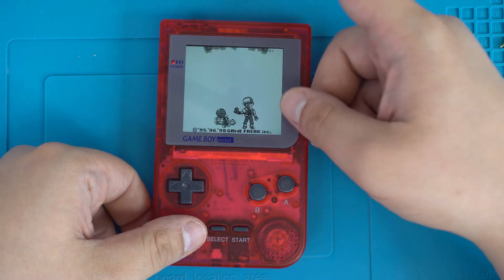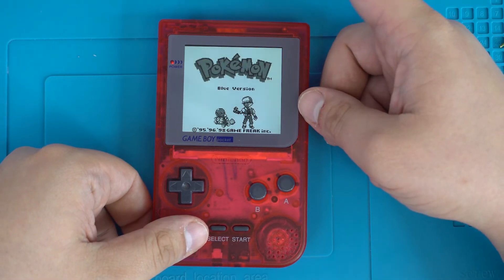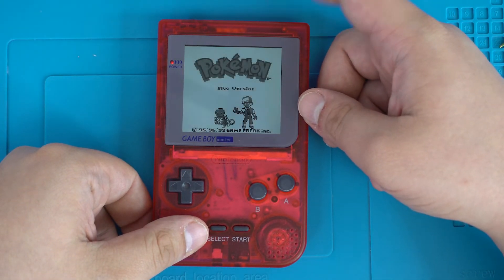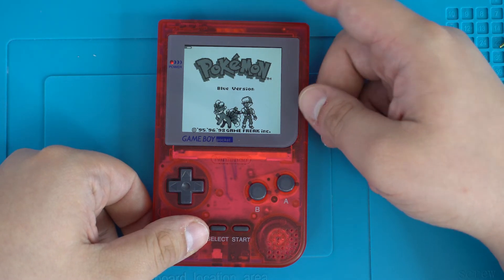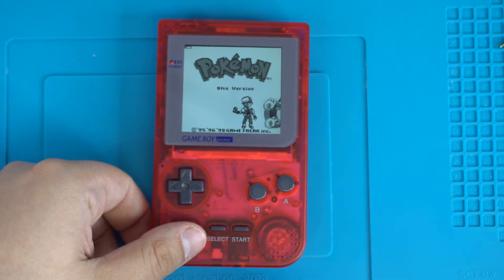To open the on-screen display, press select and A and B at the same time. To enter into your options, press select and A, and then to go back, press select and B.